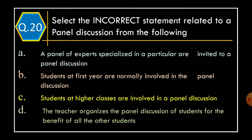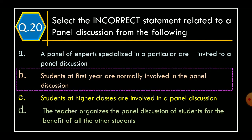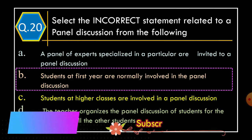Question 20: Select the incorrect statement related to a panel discussion. Option A, a panel of experts specialized in a particular area are invited to a panel discussion; Option B, students at first year are normally involved in the panel discussion; Option C, students at higher classes are involved in a panel discussion; Option D, the teacher organizes the panel discussion of students for the benefit of all the other students. The correct option is Option B: students at first year are normally involved in the panel discussion.